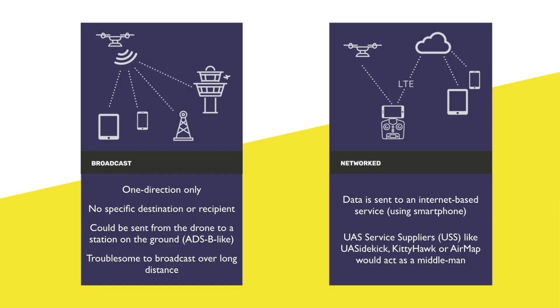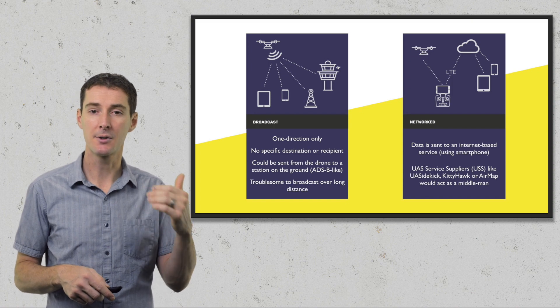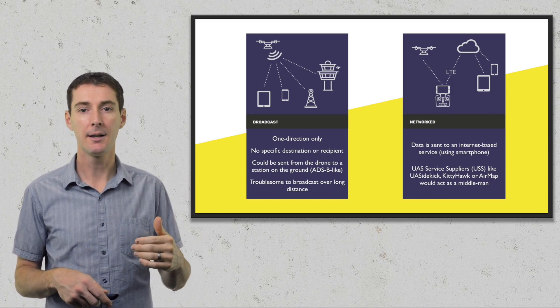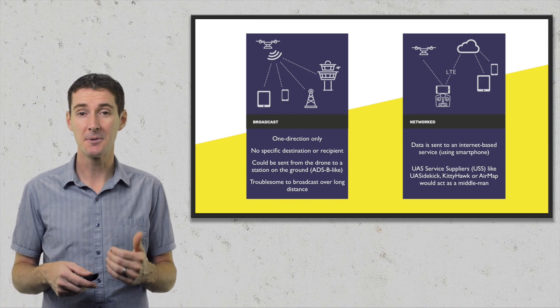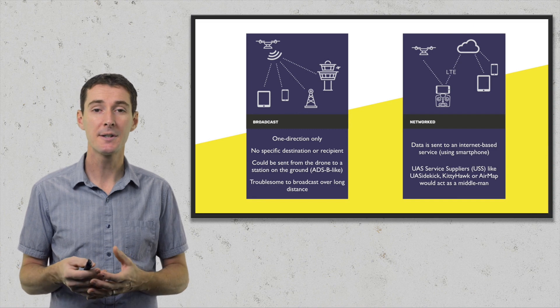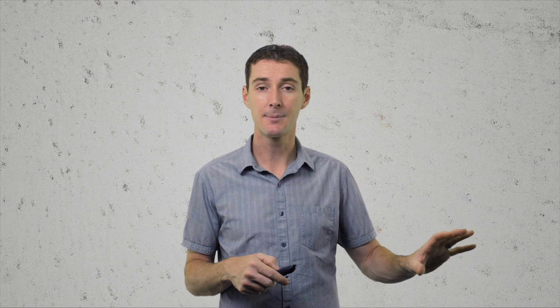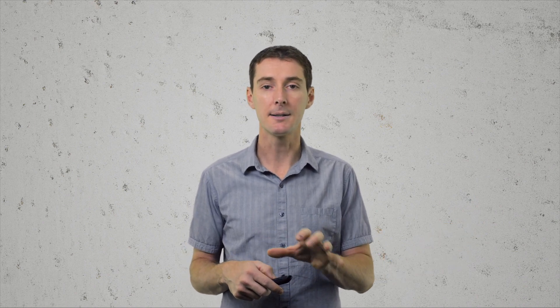With the Network concept, data is sent to the internet via a smartphone, and a USS — a service supplier like US Sidekick, Kitty Hawk, or AirMap — acts as a third-party middleman to provide that information. The downside is we still don't know what the USS end result will look like: will they charge money, or will this be a free service? A lot of people are concerned about a pay-to-play scenario, including myself, and this is not how things are handled in the manned aircraft world.